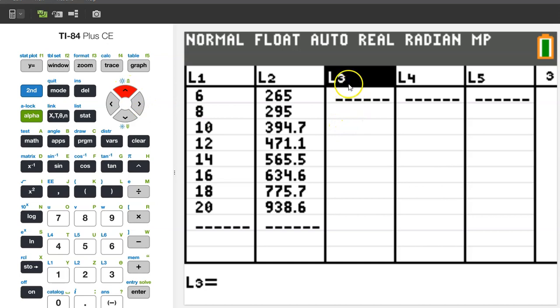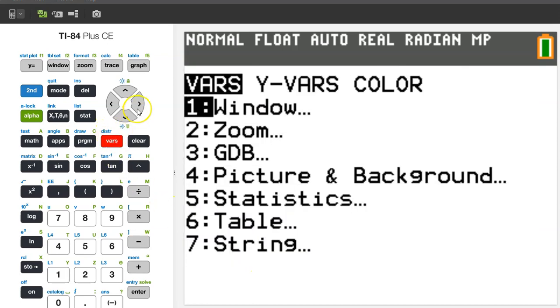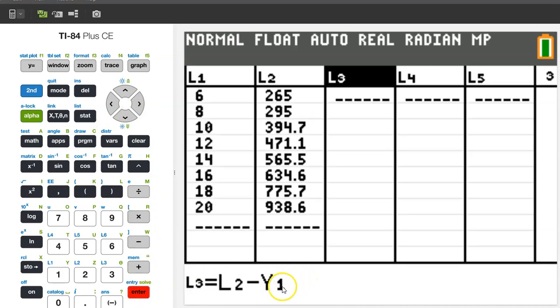Once you have all the actual values typed in, we can get the residuals to show up in L3 by going up to the label and hitting ENTER. Now, we can edit and put in a rule. Remember, to find the residuals, we want the actual value minus the predicted value. Well, the actual value is in L2. So, we can hit 2nd L2 and that will calculate the actual value. And then, we want to do minus the predicted value. Remember, the predicted value is calculated by Y1. So, we can go VARS, YVARS, ENTER, ENTER. We want Y1 at each particular input value. In other words, the predicted value will be Y1 at L1. So, we will put parentheses and 2nd L1.